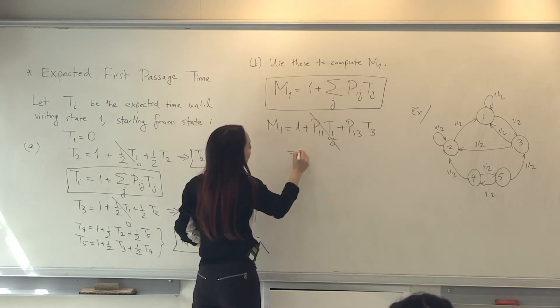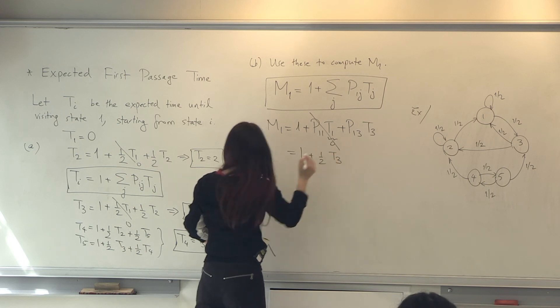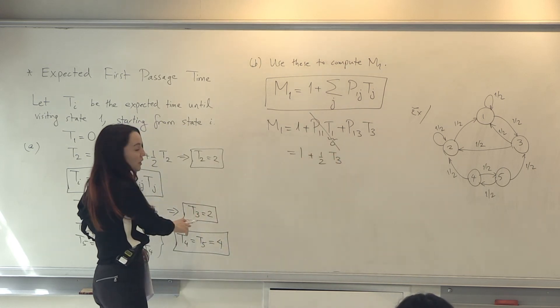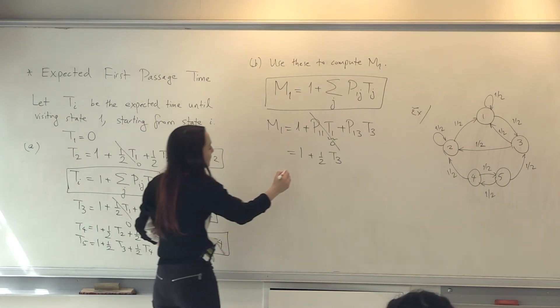That's gone. So 1 plus 1 half T3. T3 we had earlier found as 2. So 2.